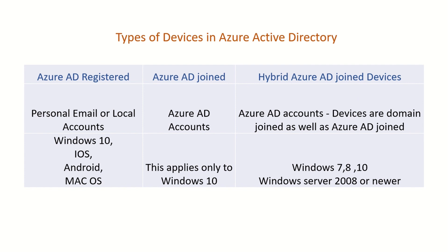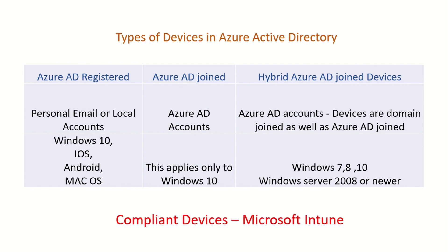Hybrid Azure AD Joined is something available with conditional access. When you configure a conditional access policy, you will get two options: hybrid Azure AD joined and compliant device. Compliant device is a tag or value added to a particular device, and this is done by an MDM solution offered by Microsoft — which is Microsoft Intune. So for conditional access, you have two types of devices available: hybrid Azure AD joined and compliant devices managed by Intune.